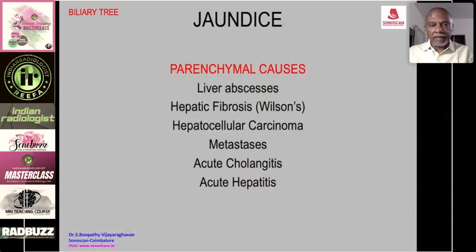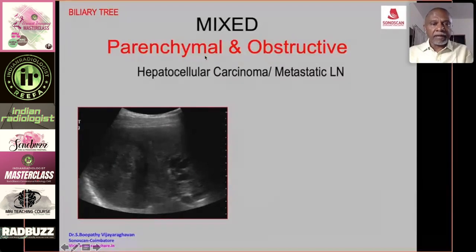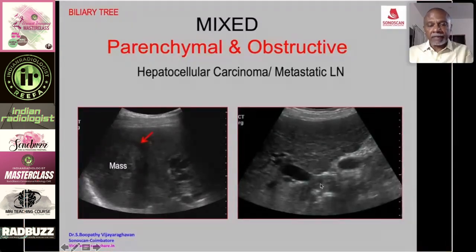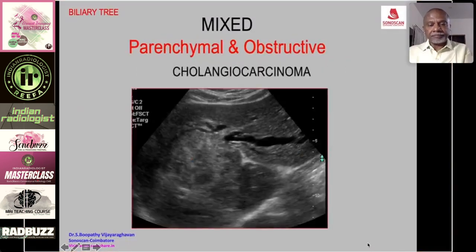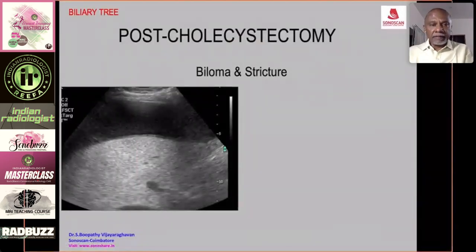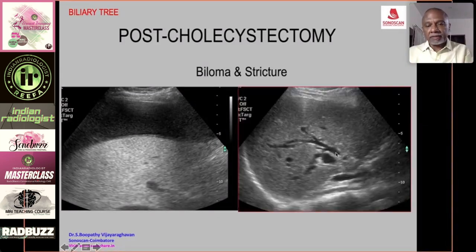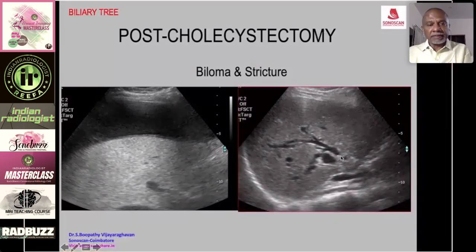Jaundice may also be due to parenchymal causes, and sometimes the cause is both parenchymal and obstructive — for example, hepatocellular carcinoma replacing most of the right lobe with a metastatic lymph node at the porta hepatis obstructing the biliary tree. Similarly, a cholangiocarcinoma in the right lobe infiltrating the porta and left hepatic duct produces dilated biliary tree in the left lobe. Post-cholecystectomy, ascites due to bile leak and stricture of the common bile duct from inadvertent ligation can occur.